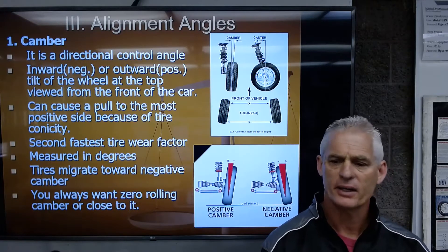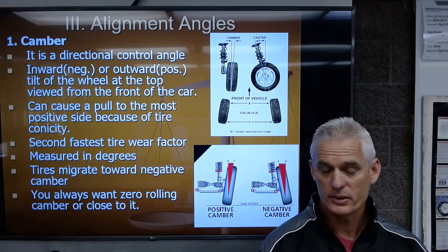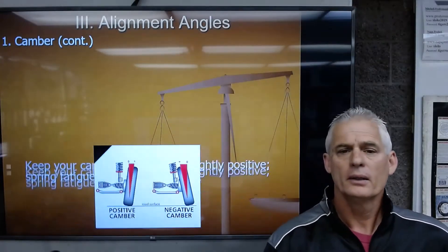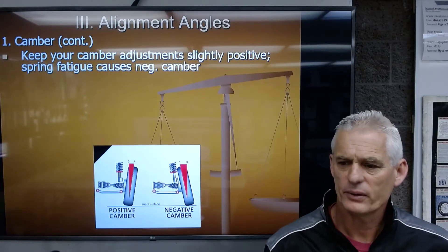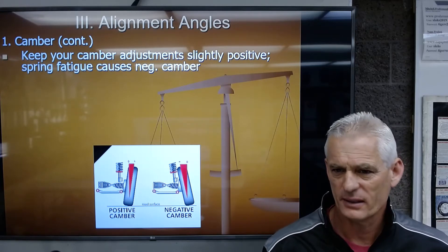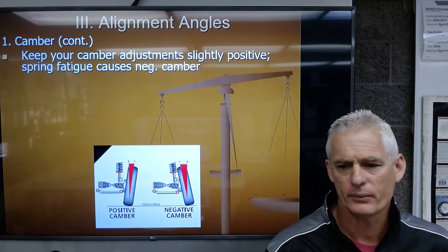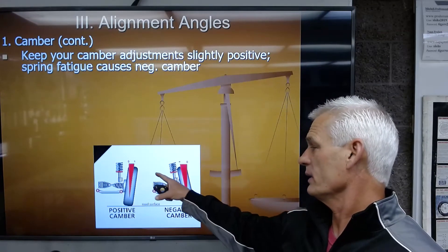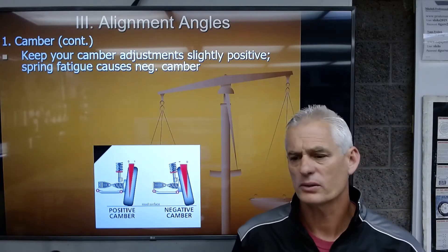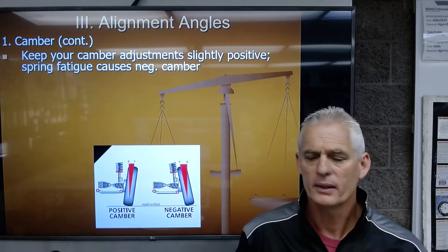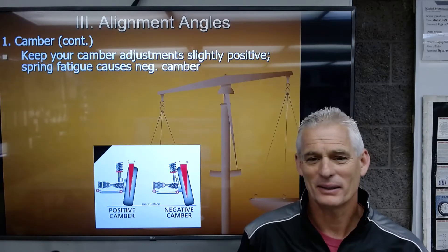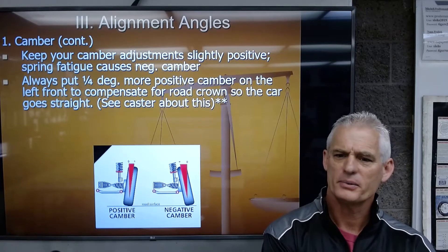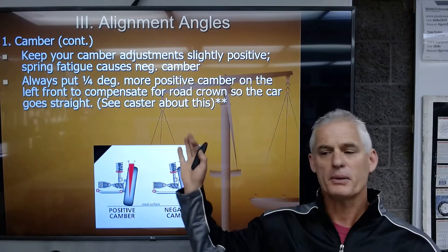Zero or slightly positive camber works well for steering and tire wear; negative camber is good for handling but hurts tire wear. We always put a quarter degree more positive camber on the left front to compensate for road crown. Some technicians use a small camber spread — for example, three-quarters positive on the right front and one degree positive on the left — to offset road crown.